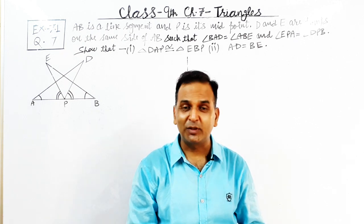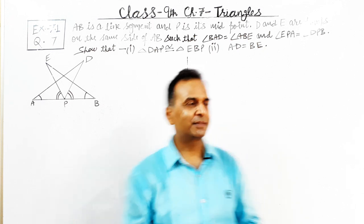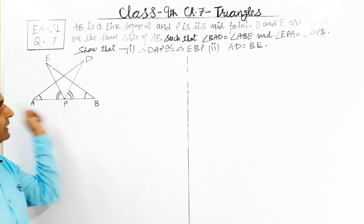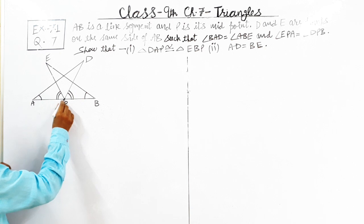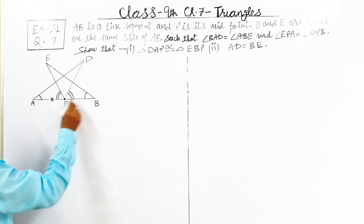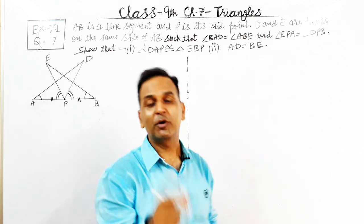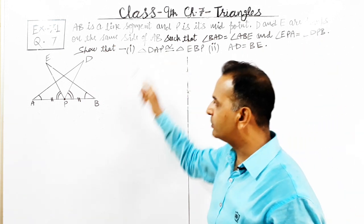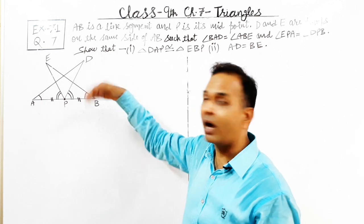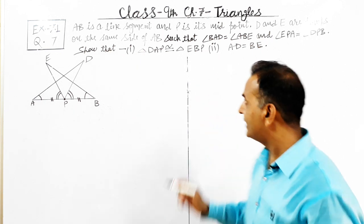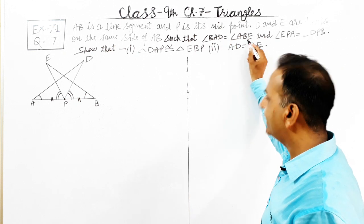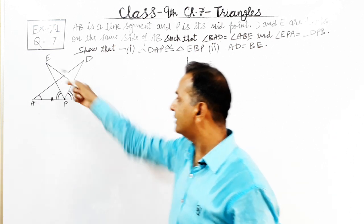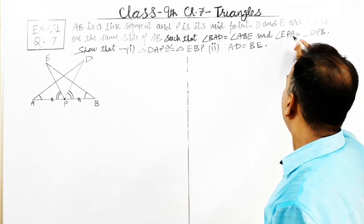Now let us understand the statement — what is given to us and what is to be obtained. The statement is: AB is a line segment, and P is its midpoint. P is the midpoint of AB means AP and PB are equal to each other. D and E are points on the same side of AB. Such that angle BAD equals to angle ABE.